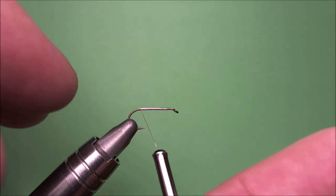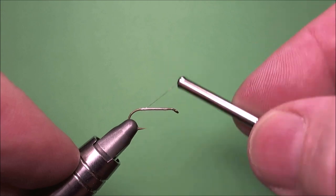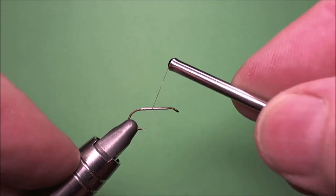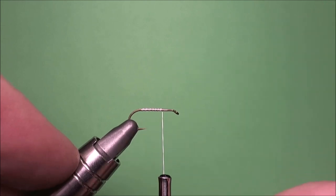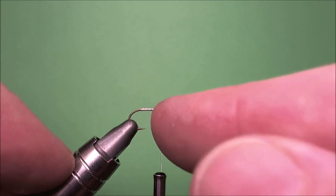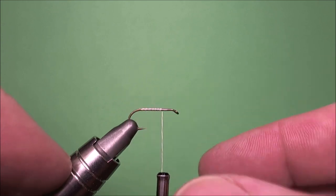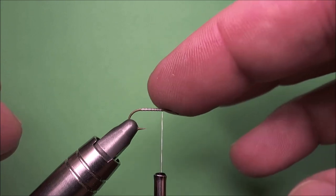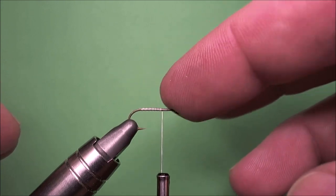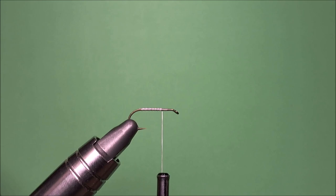And then I'm just going to do a little quick spiral wrap back up to about halfway to two thirds of the way up to the hook again, the eye. And this place is where we're going to tie in that little bit of foam.